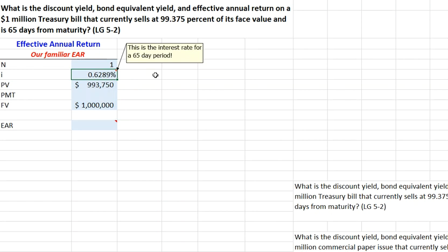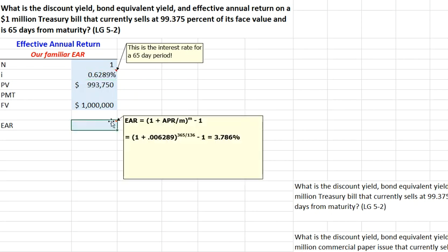We're going to have it invested for a 1 65-day period. We solve for the interest rate, and we get 0.6289. This is the interest rate for a 65-day period. If we want to use our algebraic formula for our EAR, we simply typically take the APR divided by the number of compounding periods. So if this is 18% per year, we would do 18 divided by 12 and take that whole thing to the 12th period power.